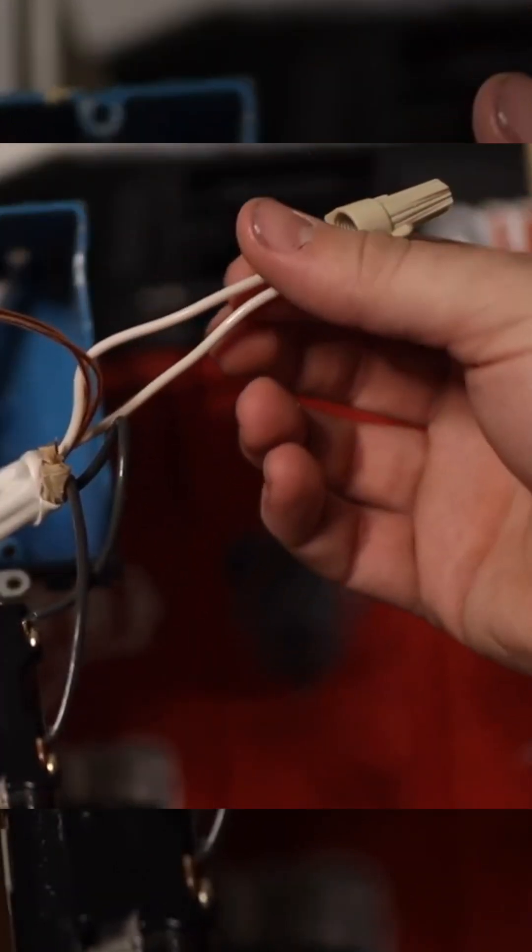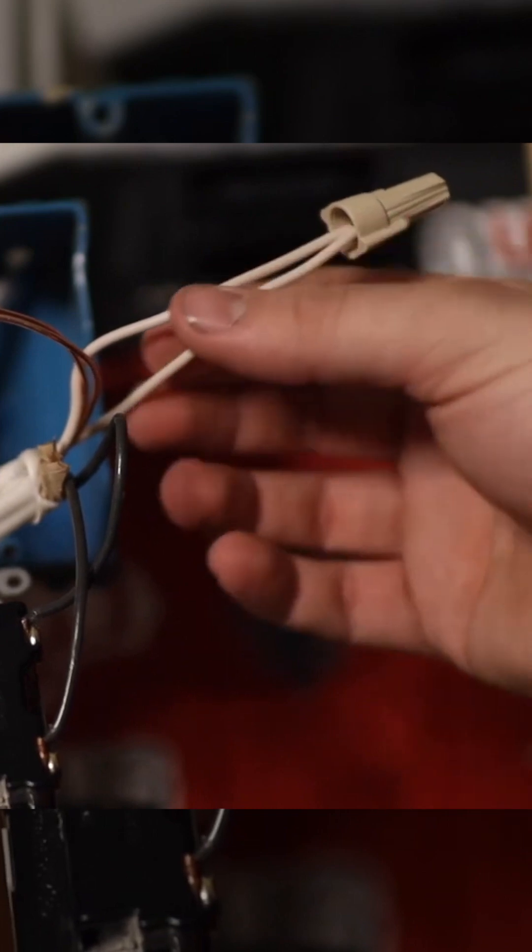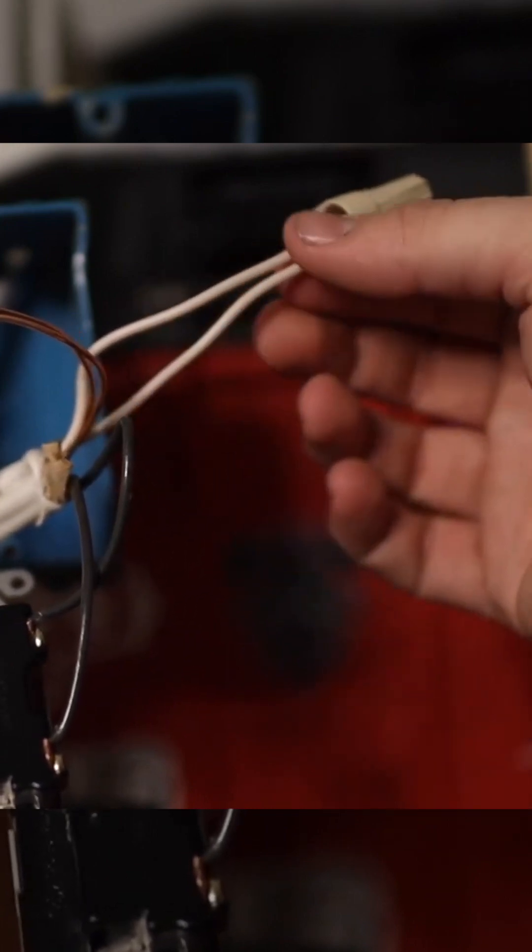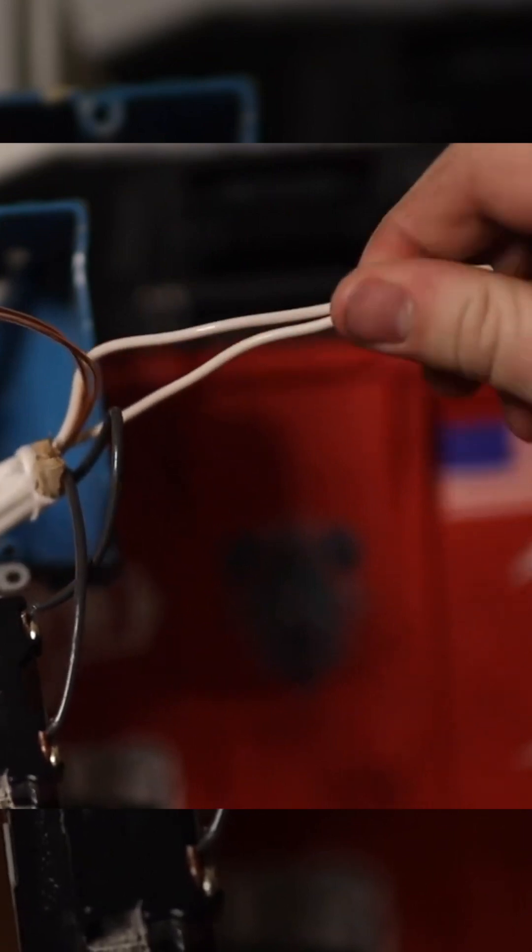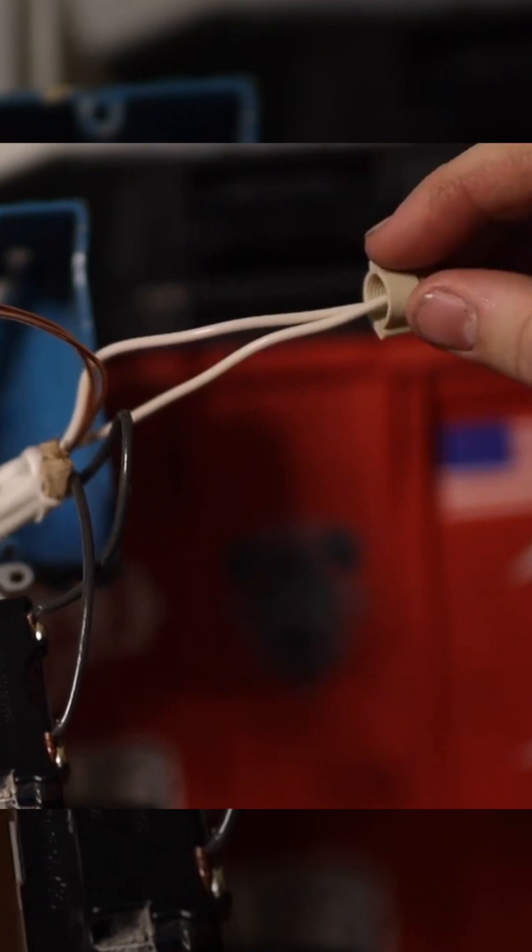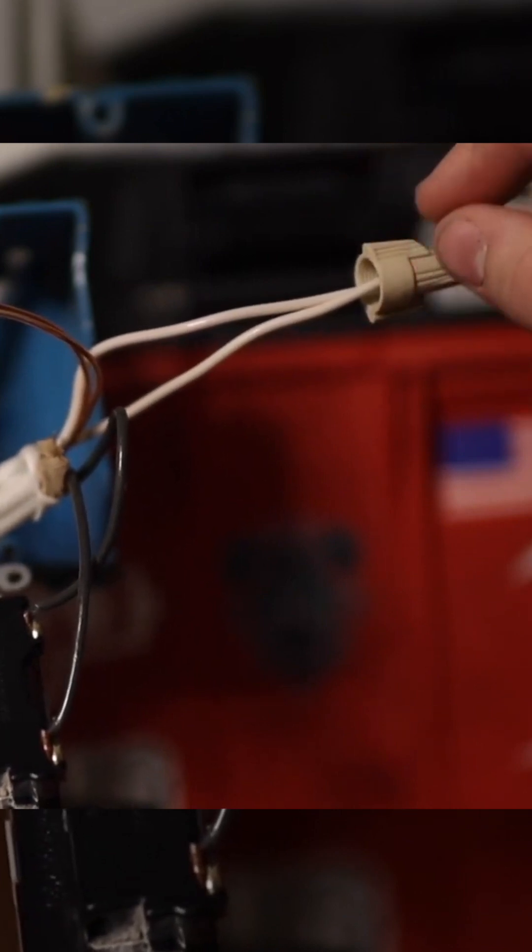Both of your white wires, these are your neutrals. So this is what the power that is used comes back to the power source on. They'll meet up in here in the switch. You'll strip them and then wire nut them together. They won't touch the switch at all, okay?